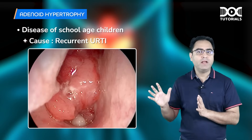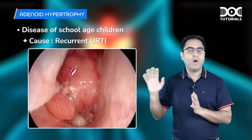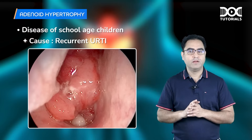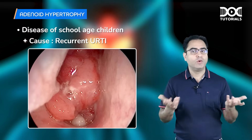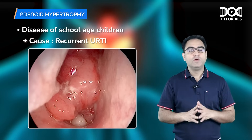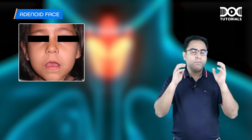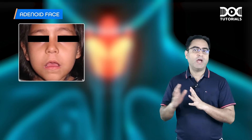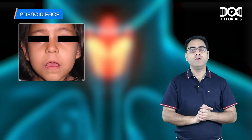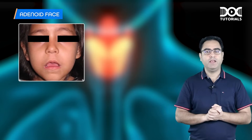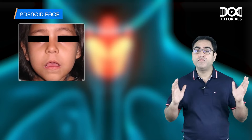Adenoids are completely blocking the choana — the posterior opening of the nasal cavity — so the patient cannot breathe through the nose. This child will have a very classical history of mouth breathing. A mouth-breathing child is a direct clue for an adenoid hypertrophy question. The look of this child is called adenoid face.